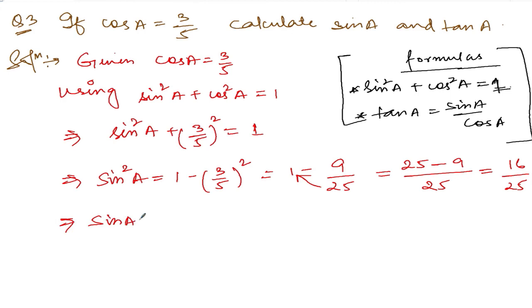Taking the square root, sin a = √(16/25) = 4/5. So we got sin a = 4/5. Now next is tan a.